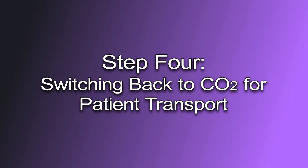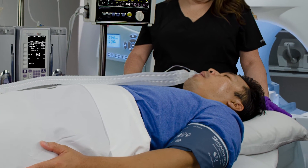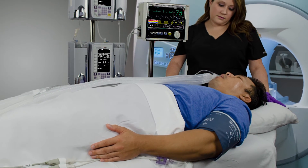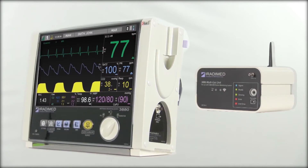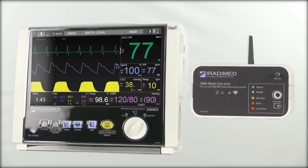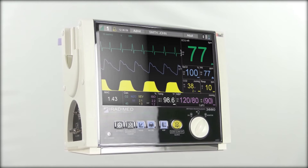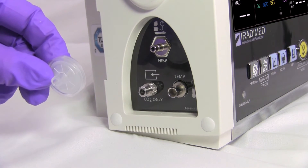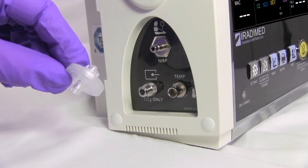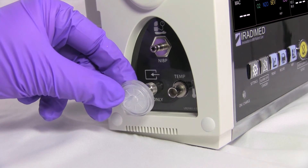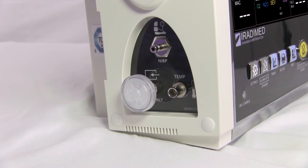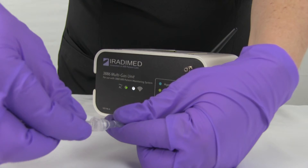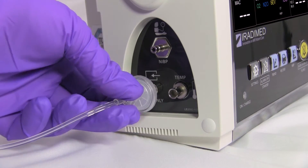Step 4: Switching back to CO2 for patient transport. Once the patient's MRI exam is complete, the user will then prep the patient for intra-hospital transport to recovery or another department. The user will need to manually change the respiration source from the multi-gas module to the monitor's built-in CO2 feature. The disk filter will need to be properly inserted as shown in the Entitle CO2 video. The user will attach the disk filter by inserting the male connector to the female port and rotating clockwise one half turn until it stops. The user will then disconnect the sample line from the NomaLine and connect it directly to the disk filter.